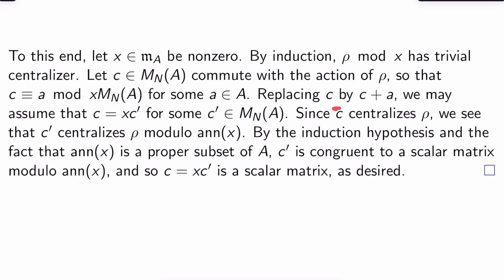If you replace C by C plus A without loss of generality, you can actually just assume that C is XC′ for some C′ in M_N(A). So these are just stupid little calculations for you to do. Now remember C centralizes ρ. And so C, because of this relationship here, C′ has to centralize ρ mod the annihilator of X.